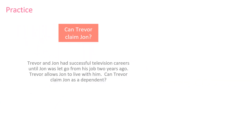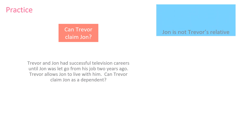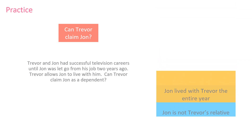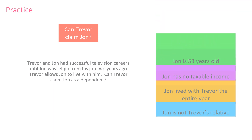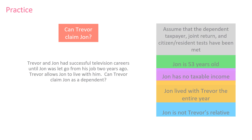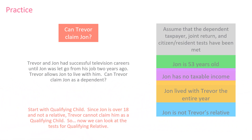Let's do some practice. We're going to look at Trevor and John. They both had successful TV careers until John was let go from his job and moved in with Trevor. Can Trevor claim John as a qualifying relative? Here are the facts: they are not related, John lived with Trevor for the entire tax year, John has no taxable income and is 53 years old. We'll assume the dependent taxpayer, joint return, and citizen/resident tests have been met. Since John is over the age limit for qualifying child and is not a child and not disabled, we're going to move on to the qualifying relative tests.